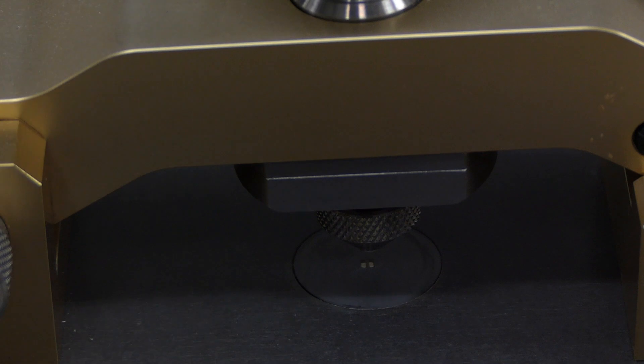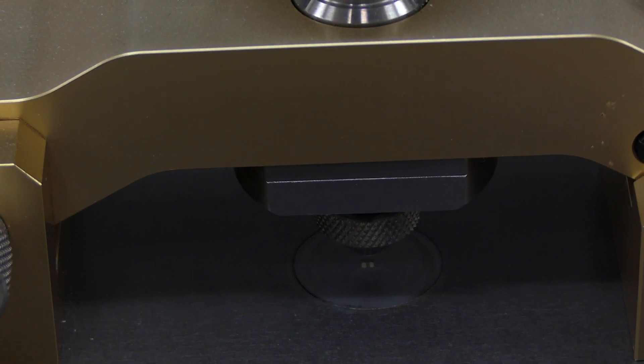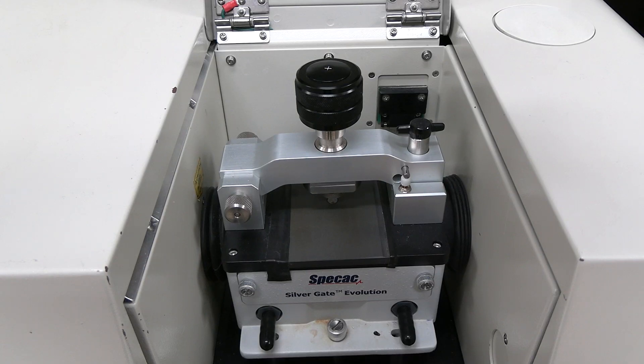Ensure the anvil does not come in contact with the sample window on the platform. The anvil could damage the window. The ATR could also look like this model and functions in the same way.